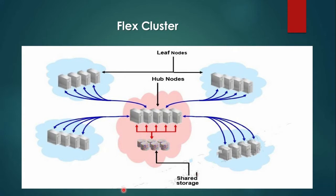Oracle RAC has introduced Flex Cluster which has two types of nodes: Hub Nodes and Leaf Nodes. Each Hub Node can access the shared storage, whereas Leaf Nodes do not require direct access to shared storage and are connected to the cluster through Hub Nodes. In other words, Hub Nodes in Oracle Flex Cluster are tightly connected and have direct access to shared storage.